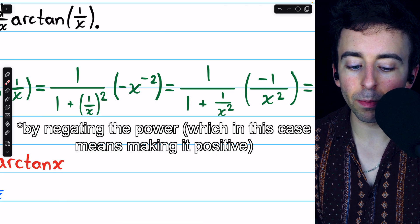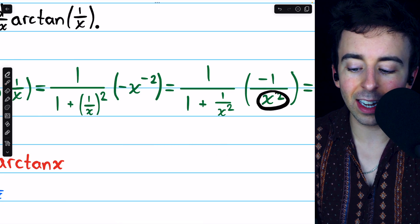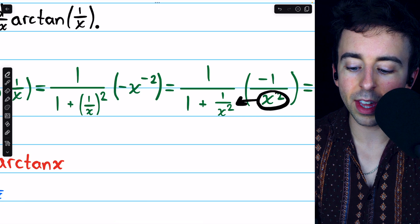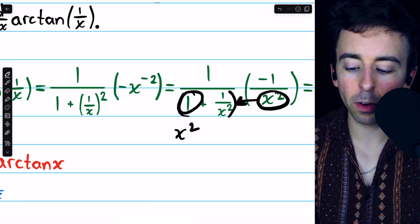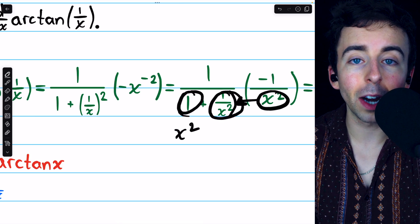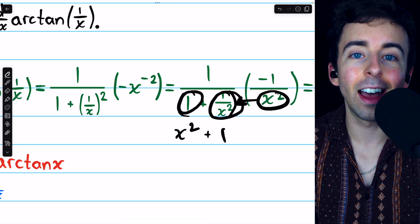What we can do is multiply this x squared that's in the denominator through this denominator. When we multiply it by 1, we get x squared, and when we multiply it by 1 over x squared, we get 1.